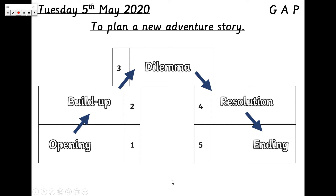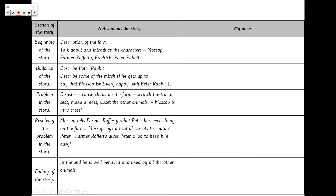Now, if you are on red and orange table, you will have five chapters in your story which follows this story mountain. If you are on yellow, green, purple, or blue table, then you will have three chapters in your adventure story. You will have an opening as chapter one, then a dilemma or problem, and then you will end your story — so yours will just have three parts.